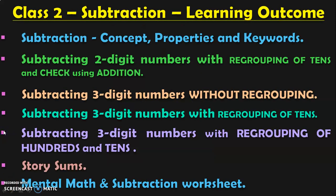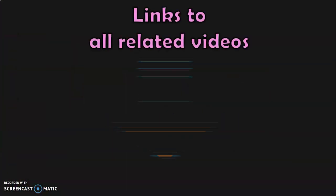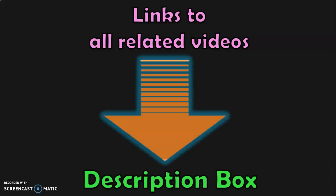Dear viewers, these are all the learning outcomes in class 2 under the subtraction topic. The first topic — subtraction concepts, properties and keywords — has been covered in a separate video. Subtracting two-digit numbers with regrouping of tens and checking the answer using addition has also been covered. In this video we saw subtracting three-digit numbers without regrouping. In upcoming videos we will see subtracting three-digit numbers with regrouping of tens, then with regrouping of hundreds and tens, then story sums, mental math, and subtraction worksheets. Links to all related topics are in the description box, and you may click the in-screen video to go to the full subtraction playlist for class 2.